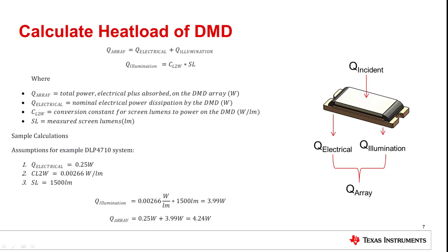Please note that the following calculations cover uniform illumination of the DMD only. We will first calculate the array power on the DMD, or total heat load, using these equations. The array power is defined as the sum of the electrical power dissipation and absorbed optical power on the device. For each DMD, the electrical power dissipation is known. We will be using the screen lumens to determine the absorbed optical power by using a conversion factor. Using our assumption of 1500 measured screen lumens, we can calculate the absorbed optical power on the device to be 3.99 watts. Adding the 0.25 watts of nominal electrical power dissipation gives us 4.24 watts of total power on the DMD, which is the total heat load.